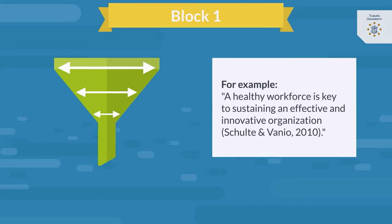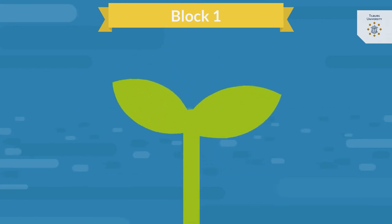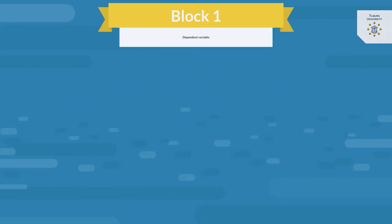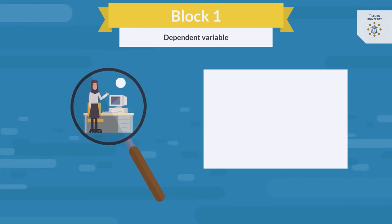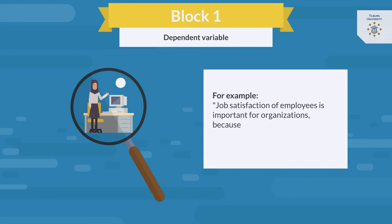From this point, the story of your paper unfolds. There are many ways to do so. An easy way is to start with your dependent variable. In our example, you would now introduce job satisfaction as the main focus of your paper and elaborate on why job satisfaction is important in organizations. Do not forget to underpin what you write about with relevant sources.